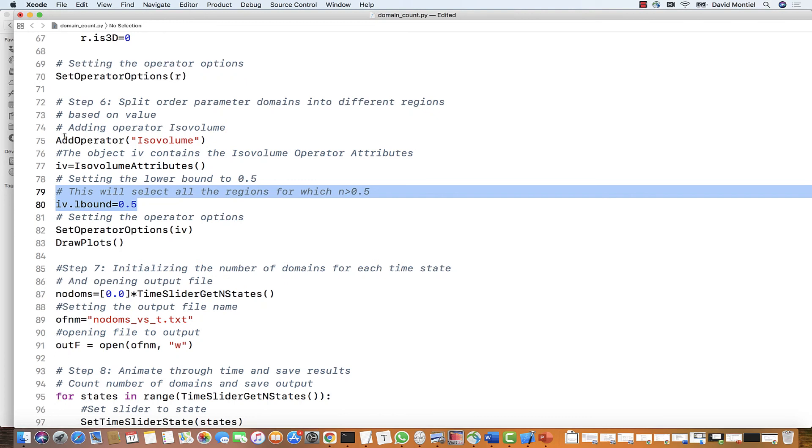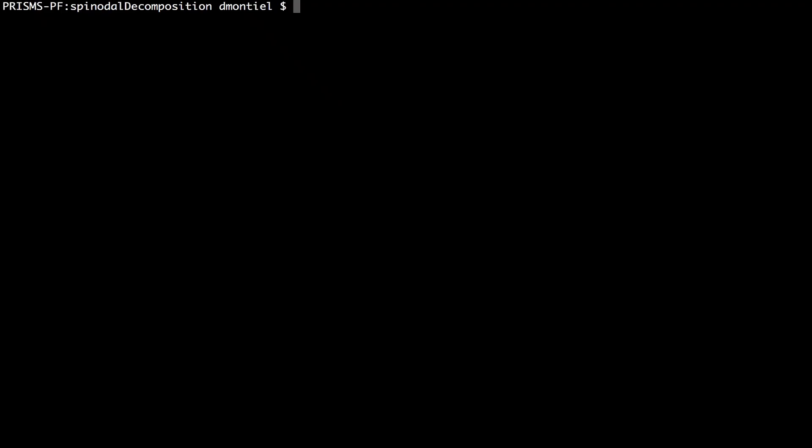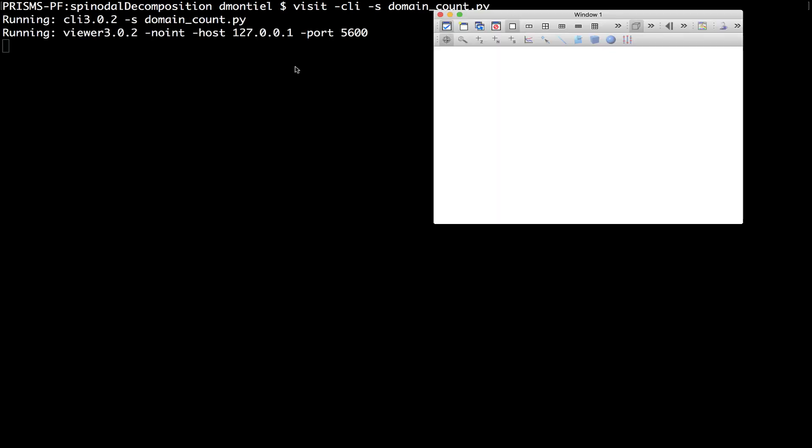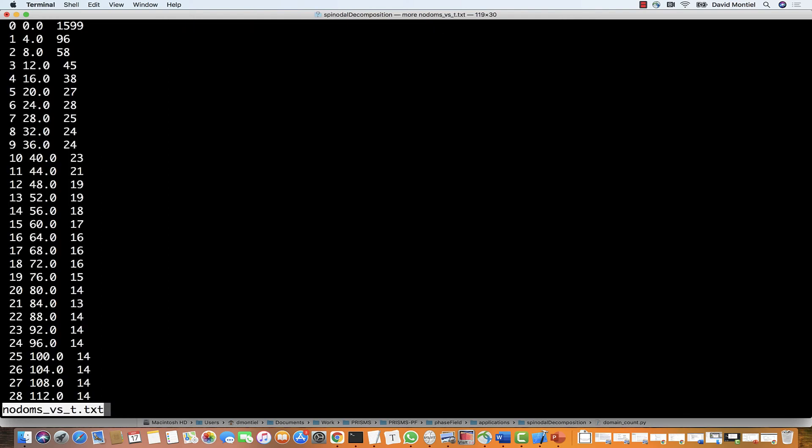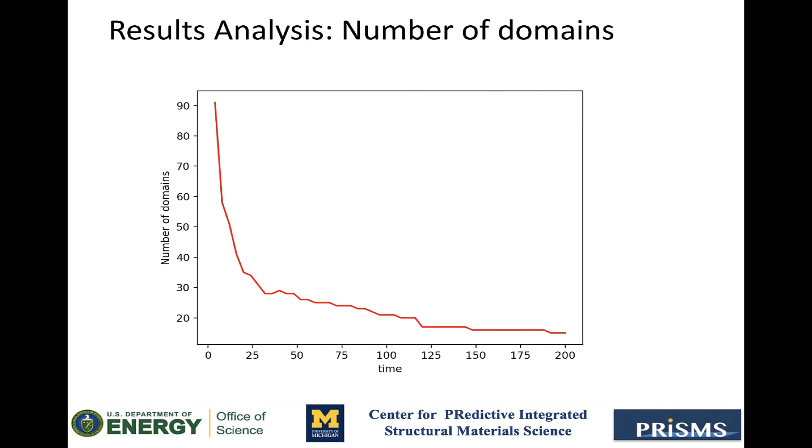And once we do that, we can run it with this command in the terminal. And when this is done, it'll create a text file with three columns, the index, the time, and the number of domains. You can just plot this using whatever tool you prefer. And this is how it looks. As expected, with coarsening, you have fewer domains as the simulation time progresses.